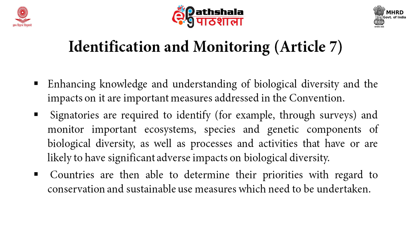In Article 7, an identification and monitoring process has been laid down. It says that enhancing knowledge and understanding of biological diversity and the impacts on it are important measures addressed in the Convention. Signatories are required to identify and monitor important ecosystems, species and genetic components of biological diversity, as well as processes and activities that have or are likely to have significant adverse impacts on biological diversity. Countries are then able to determine their priorities with regard to conservation and sustainable use measures that need to be undertaken.